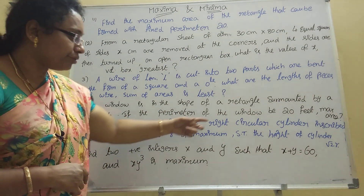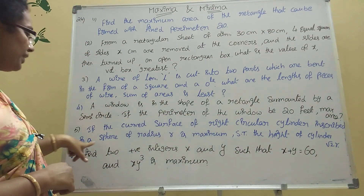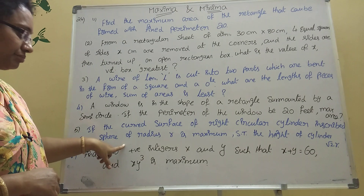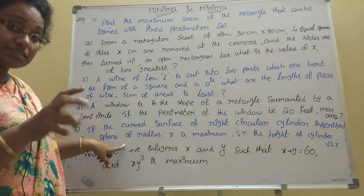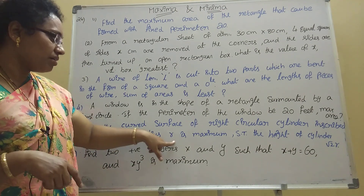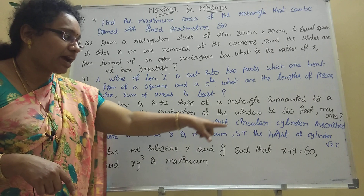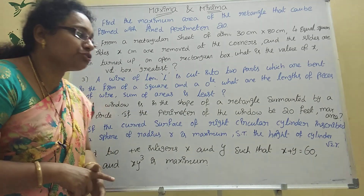Fifth problem: If the curved surface area of a right circular cylinder inscribed in a sphere of radius r is maximum, then show that the height of the cylinder is √2 r. This is also an important problem.